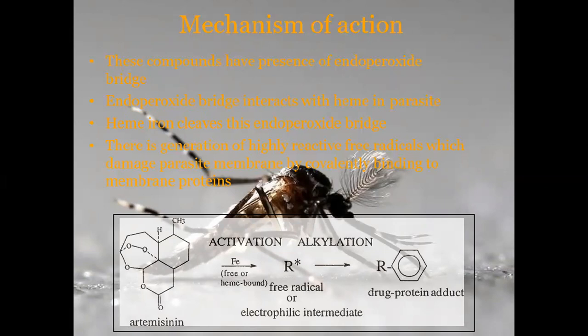The endoperoxide bridge reacts with heme in the parasite. The endoperoxide bridge comes from artemisinin — these compounds have this endoperoxide bridge. Heme iron cleaves the endoperoxide bridge, generating highly reactive free radicals, which damage the parasite membrane by covalent bonding to membrane proteins. That's how parasites are damaged by artemisinin.